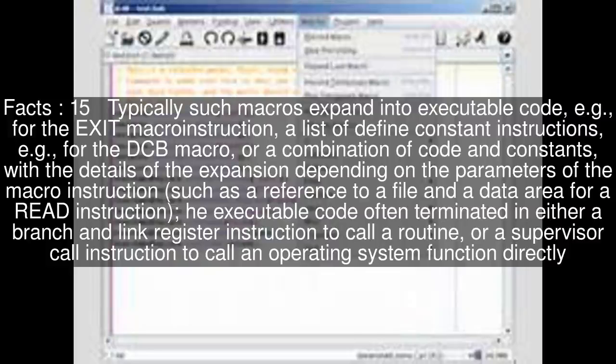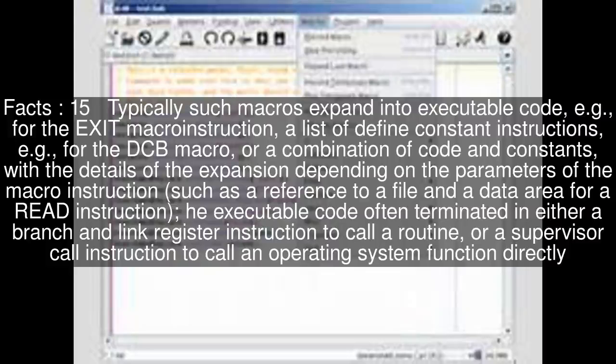With the details of the expansion depending on the parameters of the macro instruction, such as a reference to a file and a data area for a read instruction, executable code often terminated in either a branch and link register instruction to call a routine, or a supervisor call instruction to call an operating system function directly.